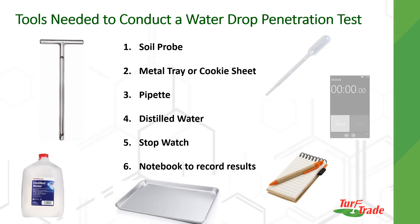Before you pull your soil cores, you're going to need a few tools to conduct the water drop penetration test. Of course, you're going to need your soil probe. You're going to need a metal tray — I just use a cookie sheet — that's what you'll dry your soil cores on. You need a pipette, distilled water, and a stopwatch — I just use my cell phone. And you're going to need a notebook to record your results.